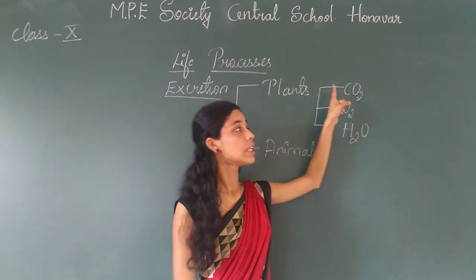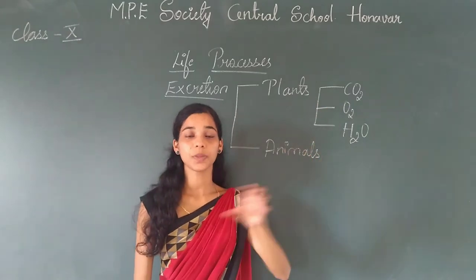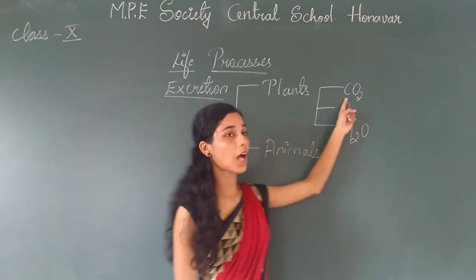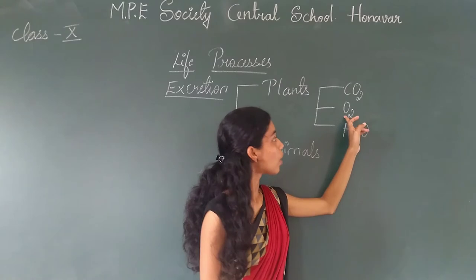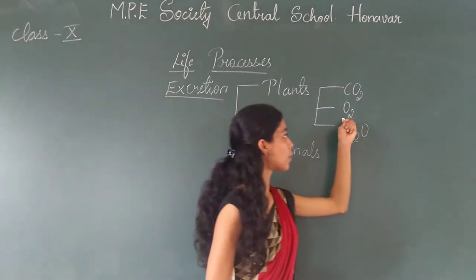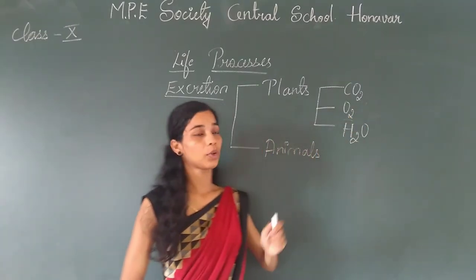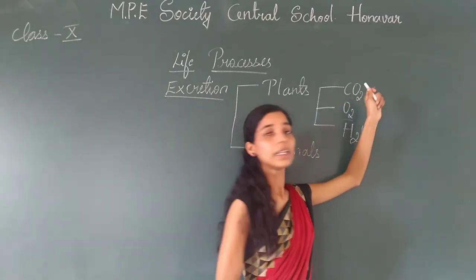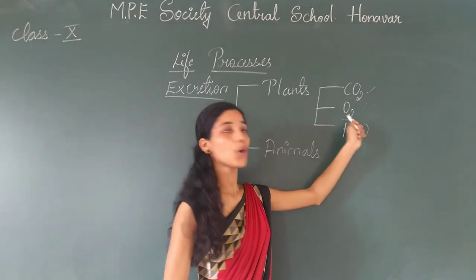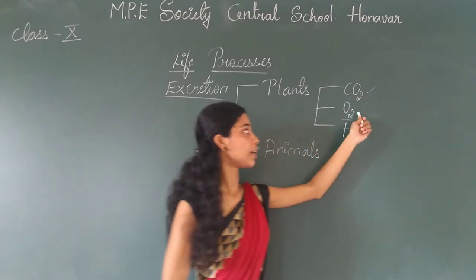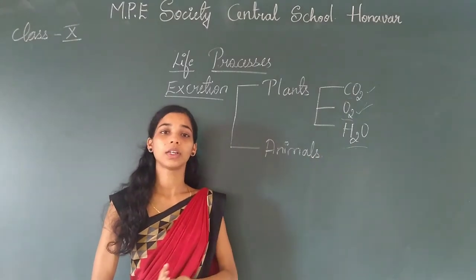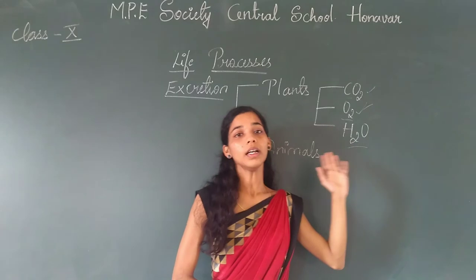Carbon dioxide waste is generated as a result of the respiration process and it is excreted out of the plant body during the night. Oxygen is generated as a result of the photosynthesis process and is excreted from the plant body during the daytime. Water vapor is generated both during the night and during the daytime, and it is excreted through stomata in the leaves.